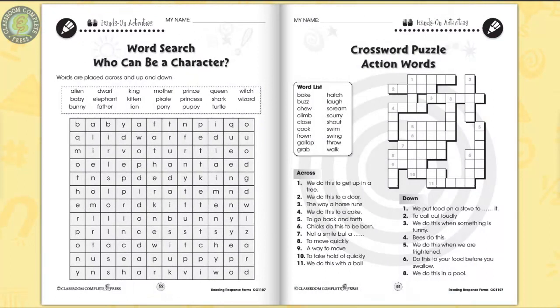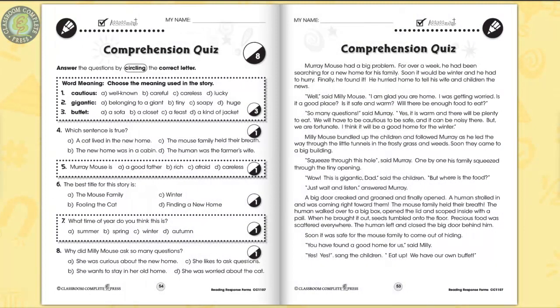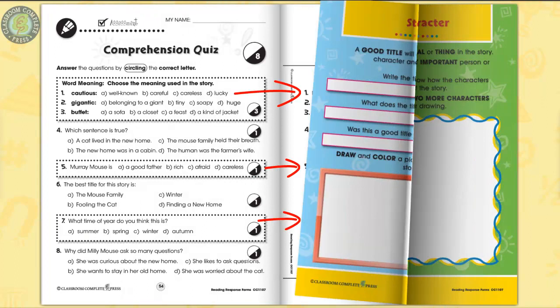Differentiated comprehension skills are measured by a crossword and word search puzzle, then a comprehension quiz. The easy marking answer key works by lining up perfectly with the matching question pages.